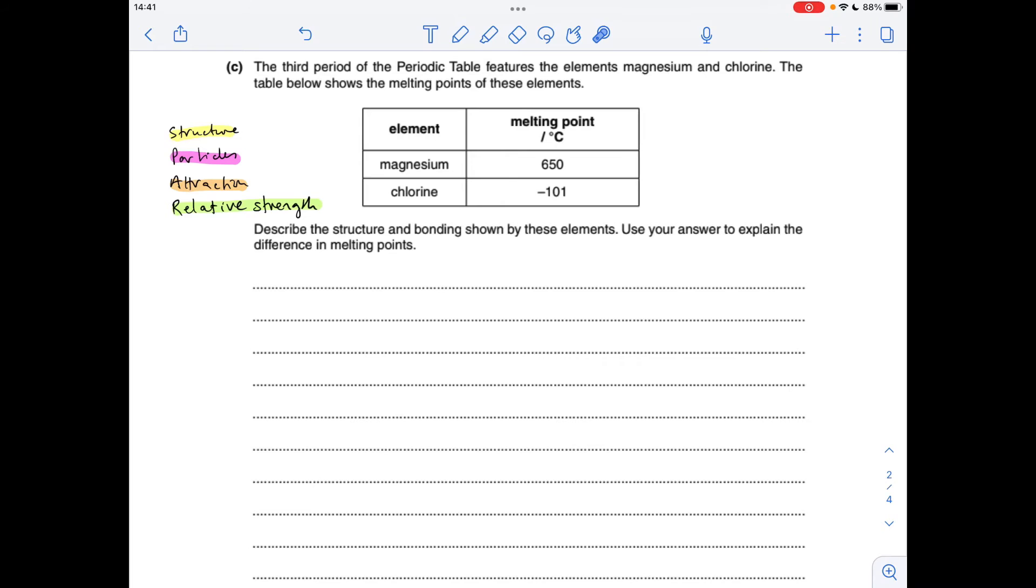So moving on to this six marker where we've got to explain the difference in the melting points of magnesium and chlorine. You'll notice I've got these key statements here and I've colour coded them, you'll see why when I show you the answer.